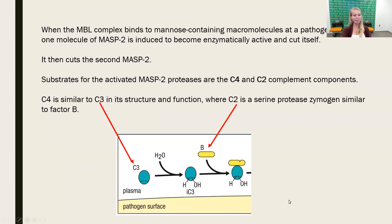When that mannose-binding lectin comes into contact with the pathogen, one of those molecules of MASP2 is going to be induced to become enzymatically active and cut itself. Then it's going to cut the other MASP2. The substrates for these activated MASP2 proteases are two new complement proteins we haven't talked about: C4 and C2, complement protein four and complement protein two.